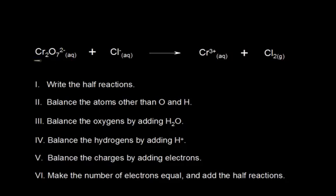We start with the dichromate anion, and we know that oxygen has an oxidation state of negative 2. We have 7 oxygens, so negative 2 times 7 gives us negative 14. The total for the entire anion has to equal negative 2, which is the charge on the dichromate anion. Therefore, we must have plus 12 for all of our chromiums. So plus 12 and minus 14 give us negative 2. Since we have 2 chromiums, each one must be plus 6 — that's the oxidation state for chromium.